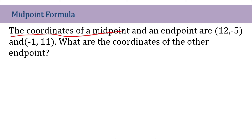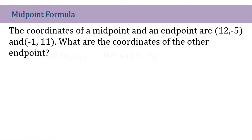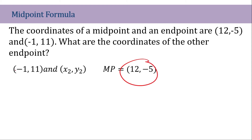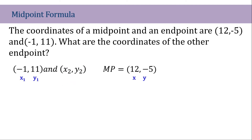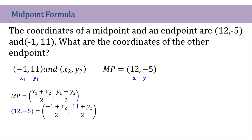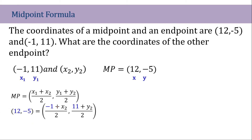The coordinate of a midpoint and an endpoint are (12, negative 5) and (negative 1, 11). What is the coordinate of the other endpoint? So we have this as our midpoint and this is one of the endpoints. Point 2 is not given, so we will leave that as blank. Let's use the midpoint formula. Since this will be our midpoint, we will divide the formula into two — this one equated to 12 and this one equated to negative 5.